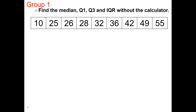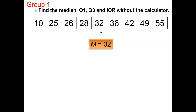So if you look at the screen, we wanted to find the median, quartile 1, quartile 3, and interquartile range. I'm also going to add the range. The median is the number in the middle. In this case it's going to be 32. There are four numbers to the left and four numbers to the right, so 50% of the data is less than the median and 50% is greater.